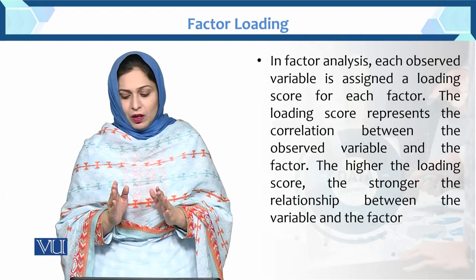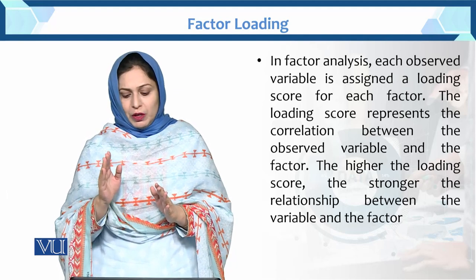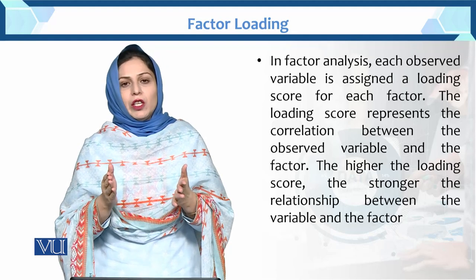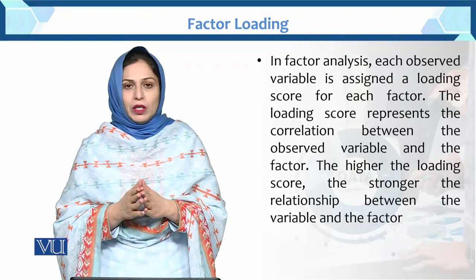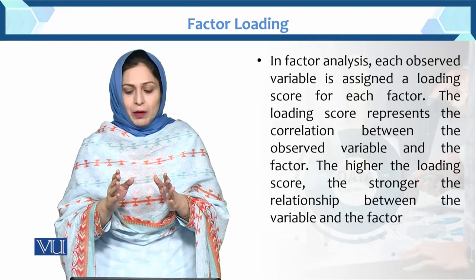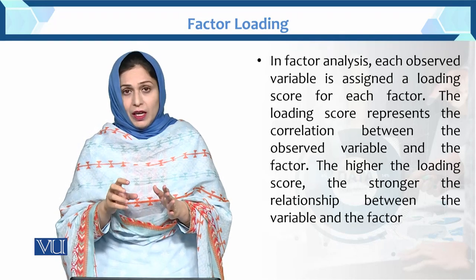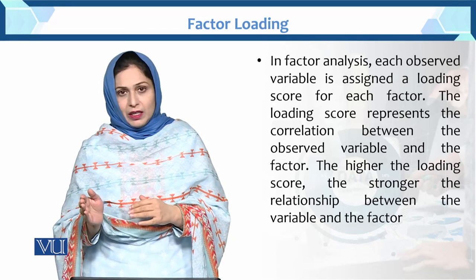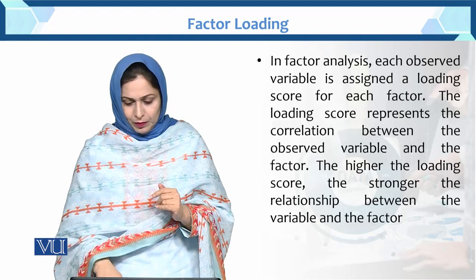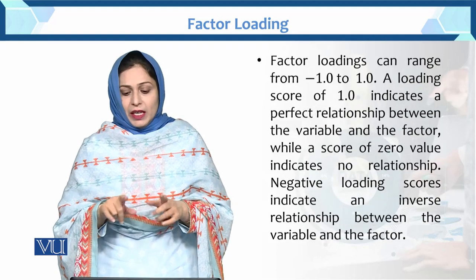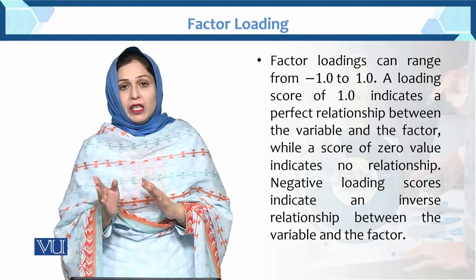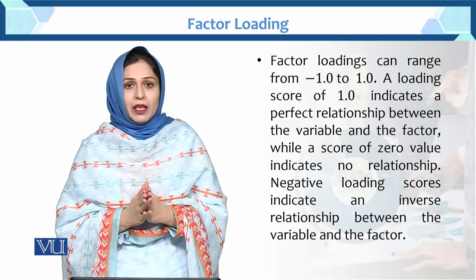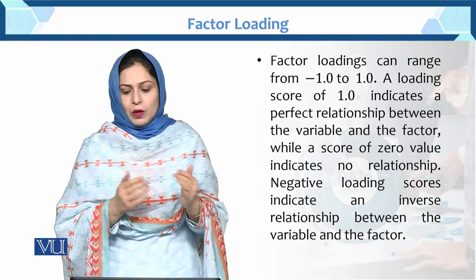The higher the loading score, the stronger the relationship between the variable and the factor. The range of correlation is minus one to one. If a higher value comes for that loading score, we can say there is a stronger relationship between the factor and the variable. Factor loadings can range from minus one to one because we are measuring correlation, and the range of correlation is minus one to one.